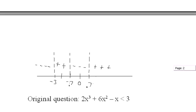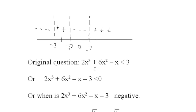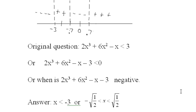But what is the original question? For what values of x is 2x cubed plus 6x squared minus x less than negative 3? That's when this polynomial is less than 0, or negative. So the answers are: x less than negative 3, and also when x is between negative 0.7 and positive 0.7 — which is the approximation for negative root one half and positive root one half. These are all the x's for which the original inequality is true.